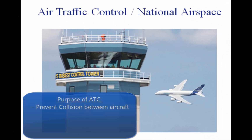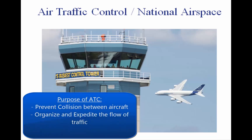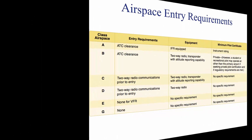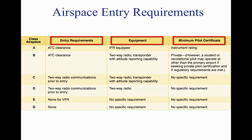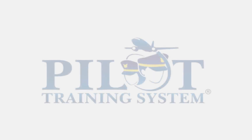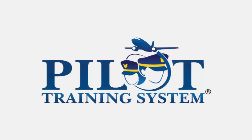The primary purpose of air traffic control is to prevent a collision between aircraft operating in the system and to organize and expedite the flow of traffic. Air traffic control may also provide additional services when the workload permits. Pilots must be familiar with the operational requirements for each of the various types or classes of airspace. The above picture shows the different airspace classes, the requirements to enter each, the equipment required in each airspace, and the license required to enter, if any. We hope you learned a lot. Please help us spread the word about Pilot Training System, and we look forward to further servicing your flight training needs.